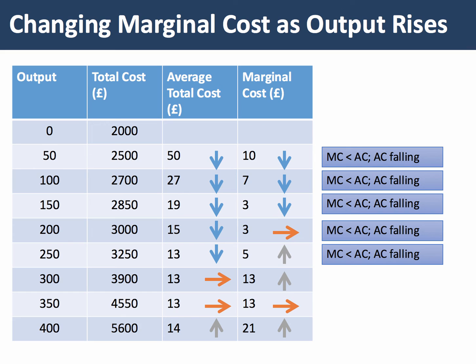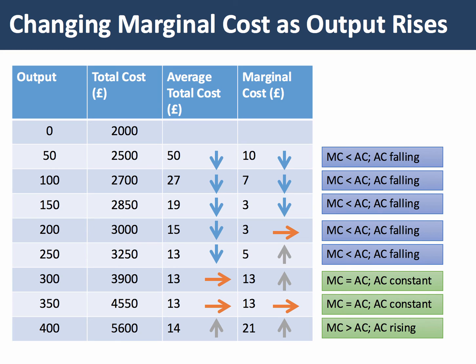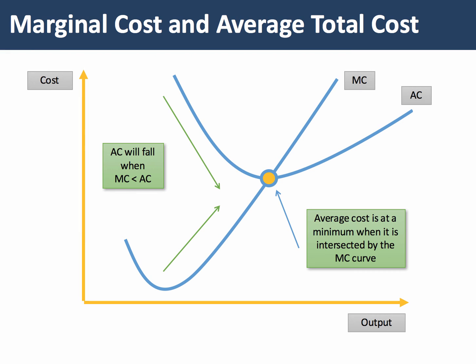The marginal cost drives the average cost, and we see that relationship here. If marginal cost is less than average cost, the average cost must fall. If marginal cost equals average cost, the average cost will stay the same. And if marginal cost is greater than average cost, the average cost must rise. These are important relationships to understand as part of understanding the shape of the traditional cost curves of a business. When you draw the marginal cost curve in the exam, it must intersect average cost at the minimum of the average cost curve.